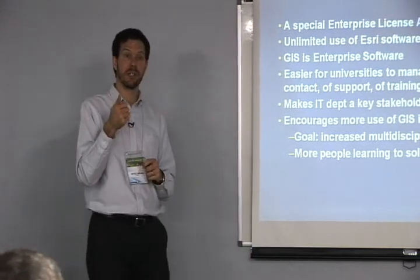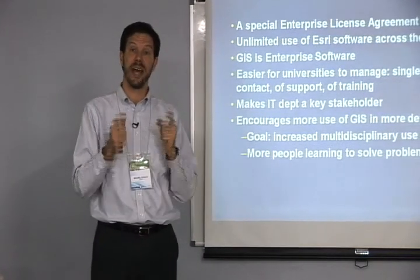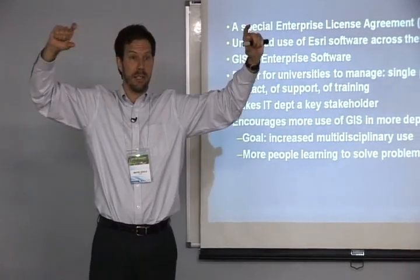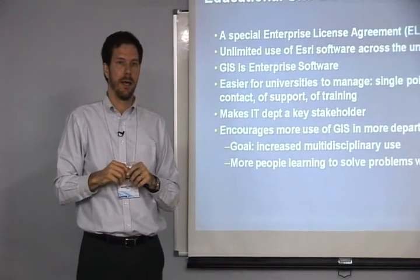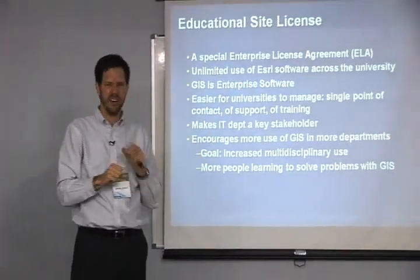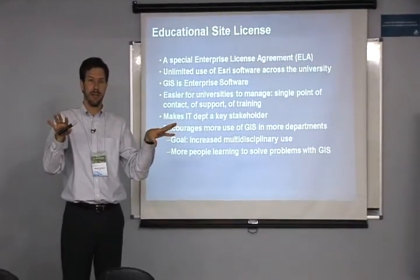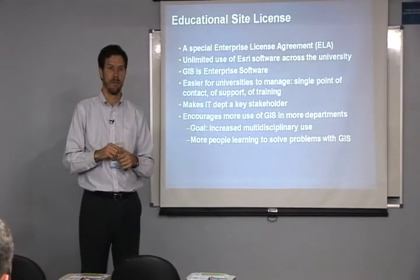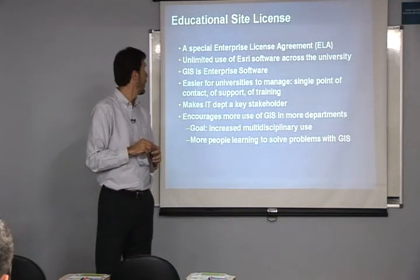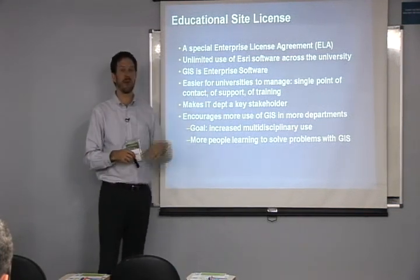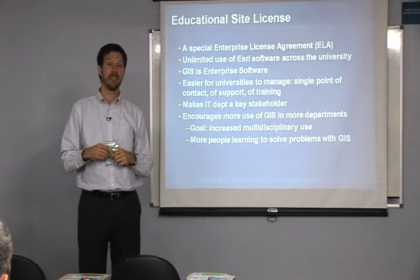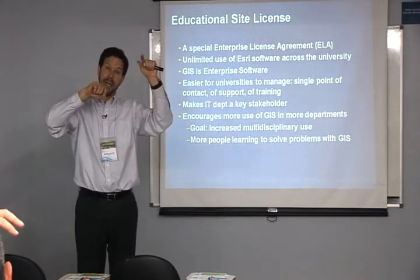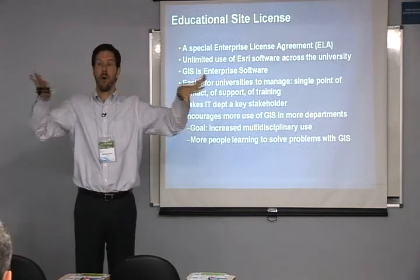One of the keys, and we'll hear more about this, is what's called the educational site license — the idea of treating GIS as enterprise software, and forgetting about having a little bit of GIS here and a little bit of GIS there with separate licenses and separate administration. That's not efficient, it's confusing, and people don't talk to each other. When we treat GIS as enterprise software, we have a single point of contact — perhaps the library, the IT department, or the geography department — managing software for everyone on campus.